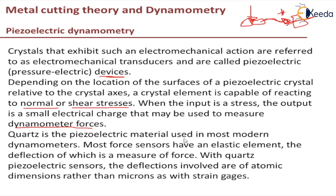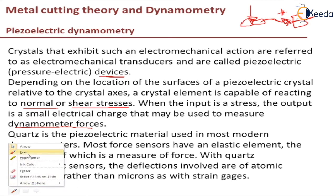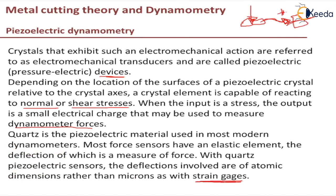Quartz is a piezoelectric material used in modern dynamometers. It is mostly used because of certain advantages. Most force sensors have an elastic element whose deflection is a measure of force, but with quartz piezoelectric sensors the deflections involved are of atomic dimensions rather than in microns as in strain gauges. This is why quartz is mostly used in modern dynamometers. It provides a transducer with very great stiffness, high natural frequency, low rise time, and also a high time constant. Quartz transducers also have very high resistance and a useful anisotropic property.